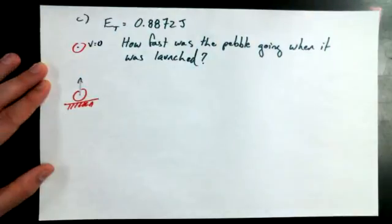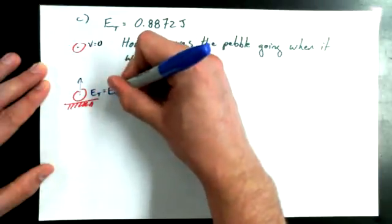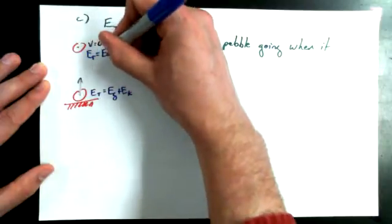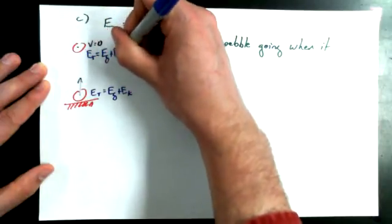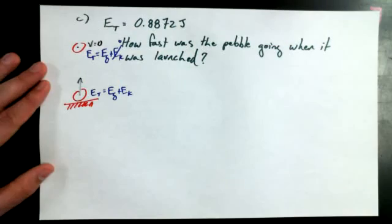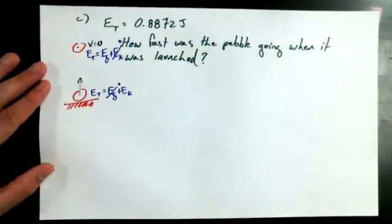It starts off with this huge speed. It gets up to the maximum height where V is equal to 0. And you could say that E total at the bottom is equal to EG plus EK. And E total at the top also equal to EG plus EK. And we say that at the top, since it comes to a stop, kinetic energy is equal to 0. But at the bottom, since it's starting from a height of 0, EG is equal to 0 because the height is equal to 0. And of course, EG is based on height, whereas EK is based on the speed.